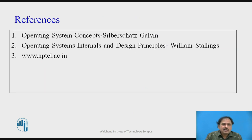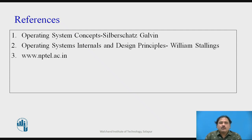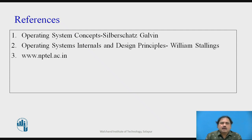From the given RAG, we can determine whether deadlock is either present or not present in the system. The RAG is quite useful for finding deadlock conditions without actually executing the system. I hope this video was useful and you understood the concept of the Resource Allocation Graph. Thank you for watching.